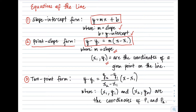The two-point form has the formula y − y₁ = [(y₂ − y₁)/(x₂ − x₁)] × (x − x₁), where (x₁, y₁) and (x₂, y₂) are the coordinates of the two given points on the line.